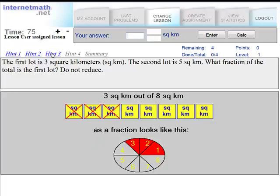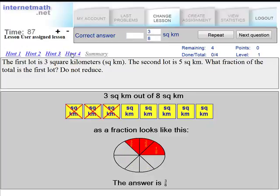In the next hint, there are 3 square kilometers out of 8 square kilometers and we actually see a visual model of the fraction 3 out of 8. Clicking on the last hint gives the answer 3 over 8 as both a number and a picture.